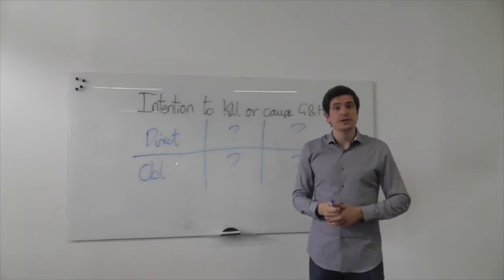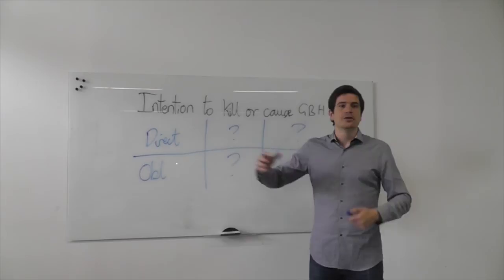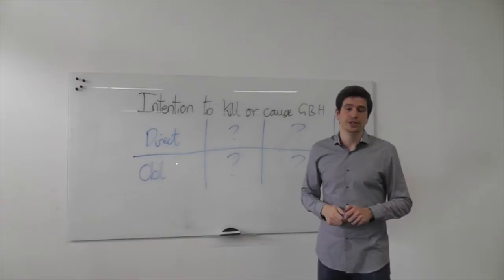An example which is quite useful is from a problem question we set in an exam a couple of years ago. In this scenario, we had a defendant who was out aiming to go and kill a rival from another gang. But on confrontation with this rival, that rival grabbed one of the defendant's friends and held him in front of him as a human shield.